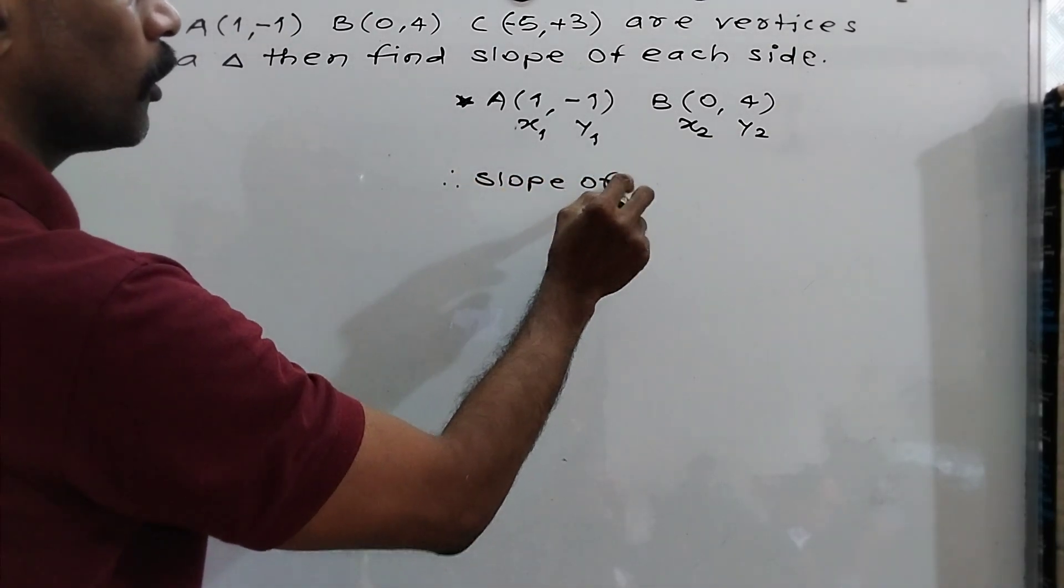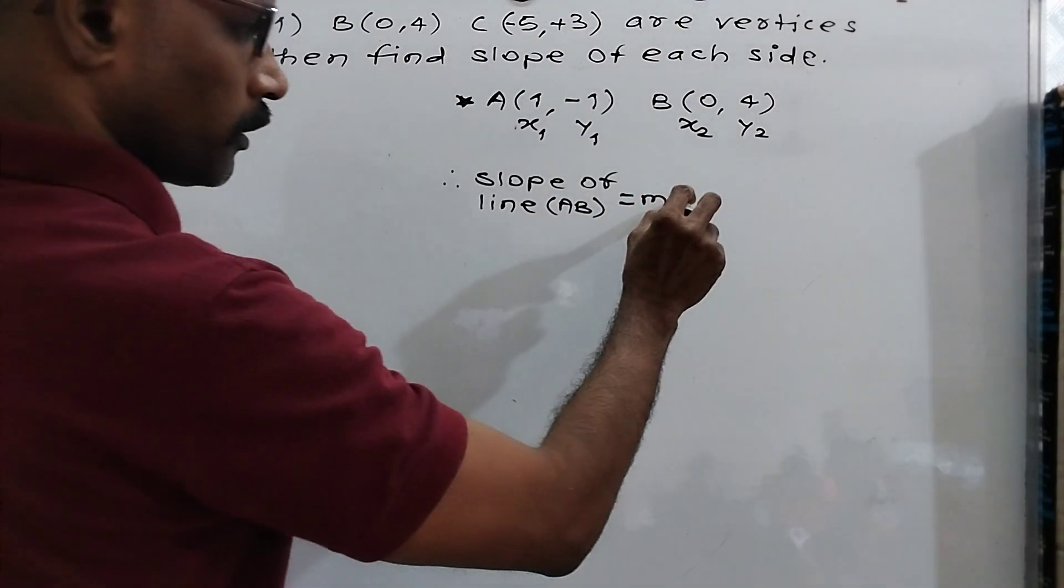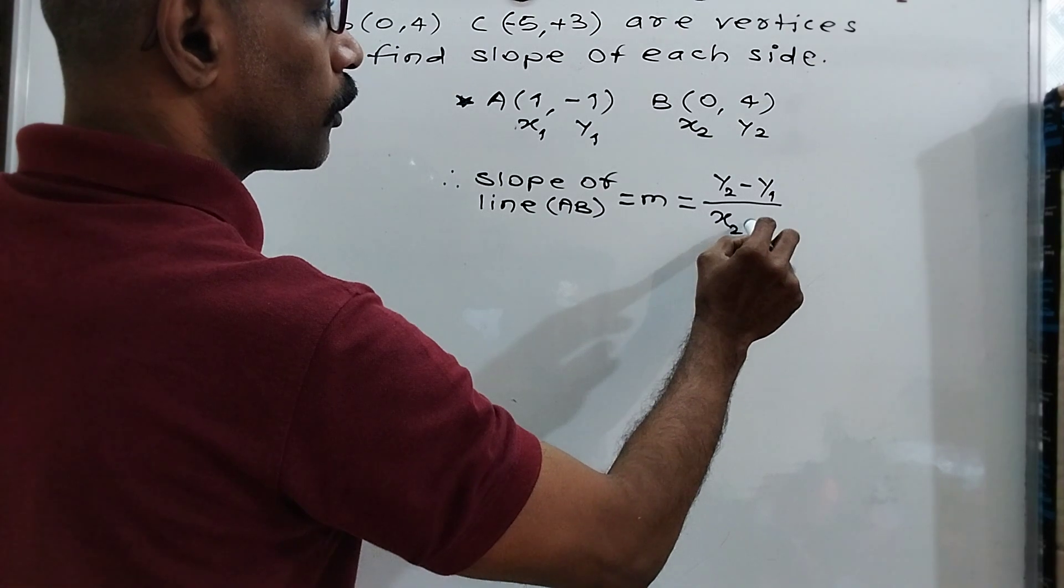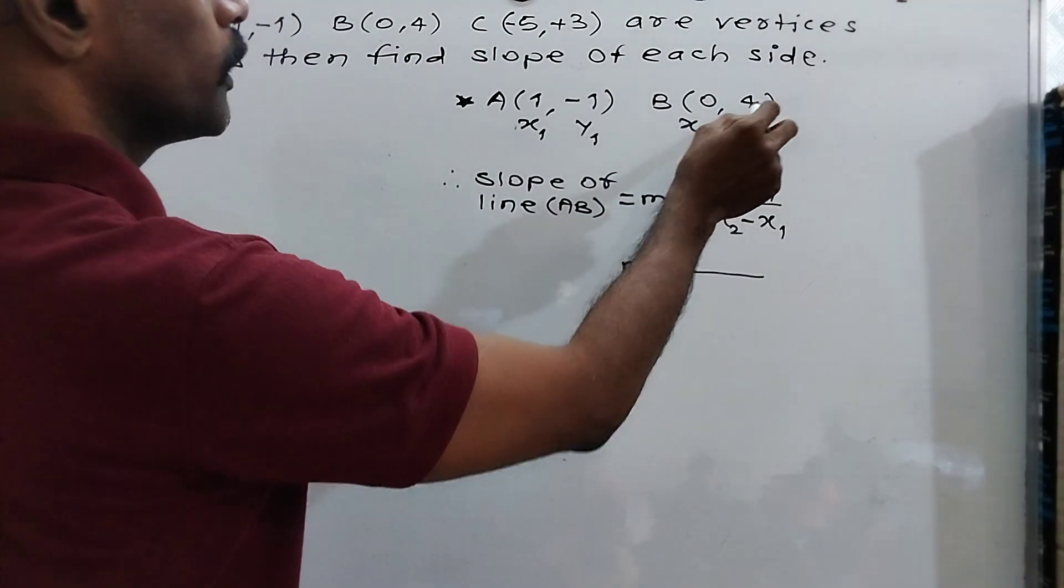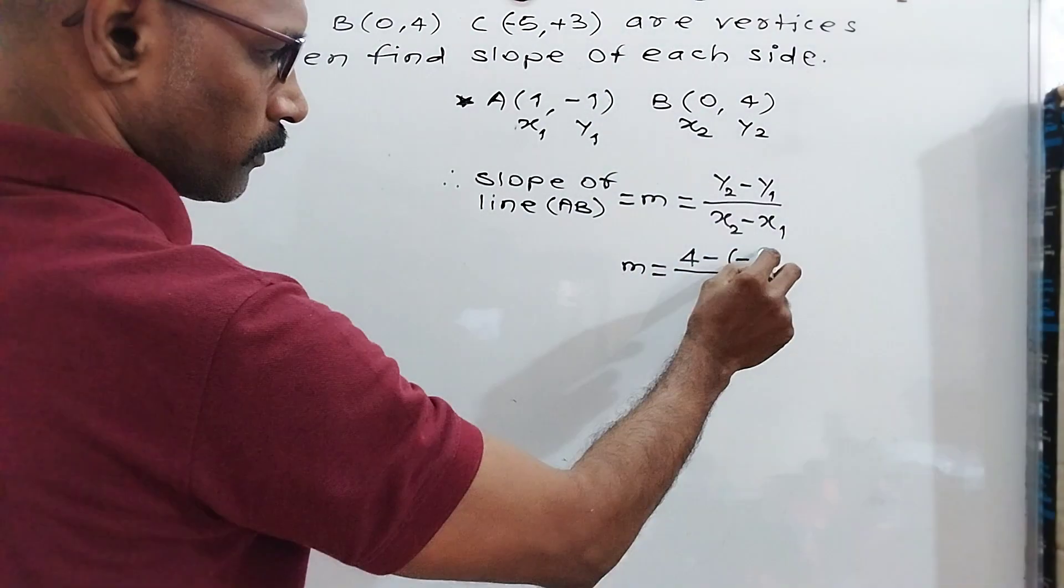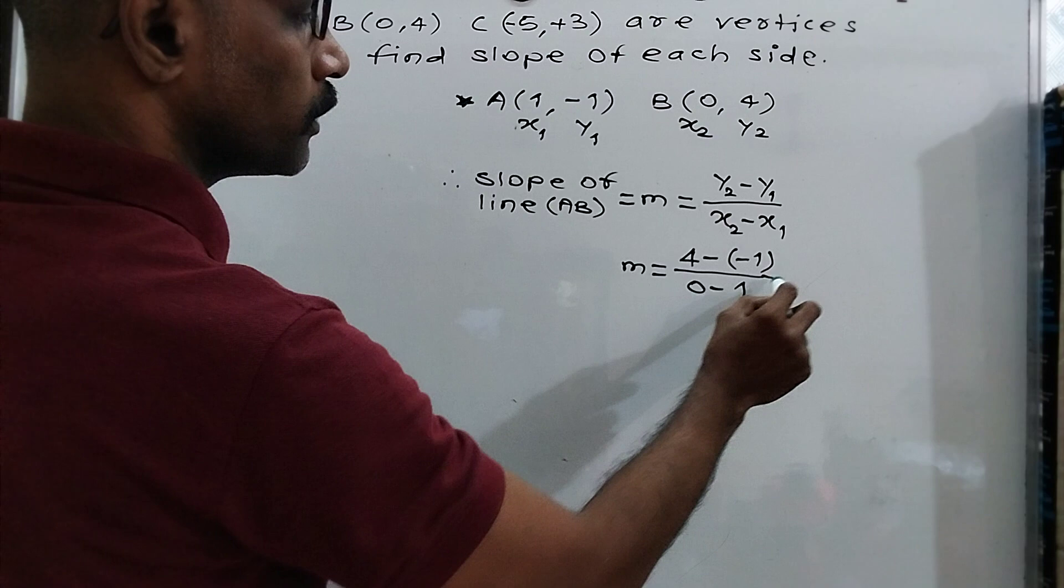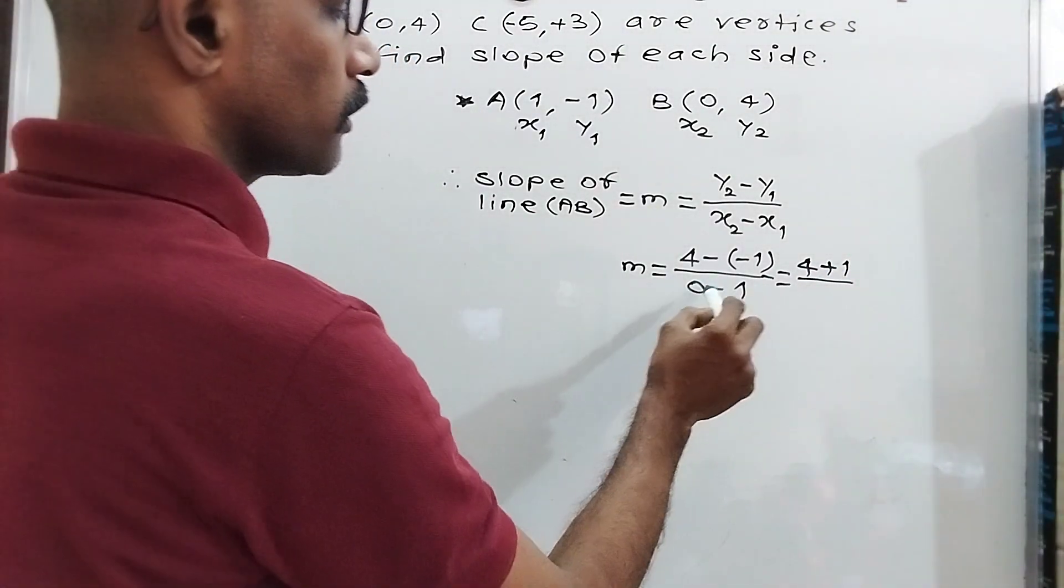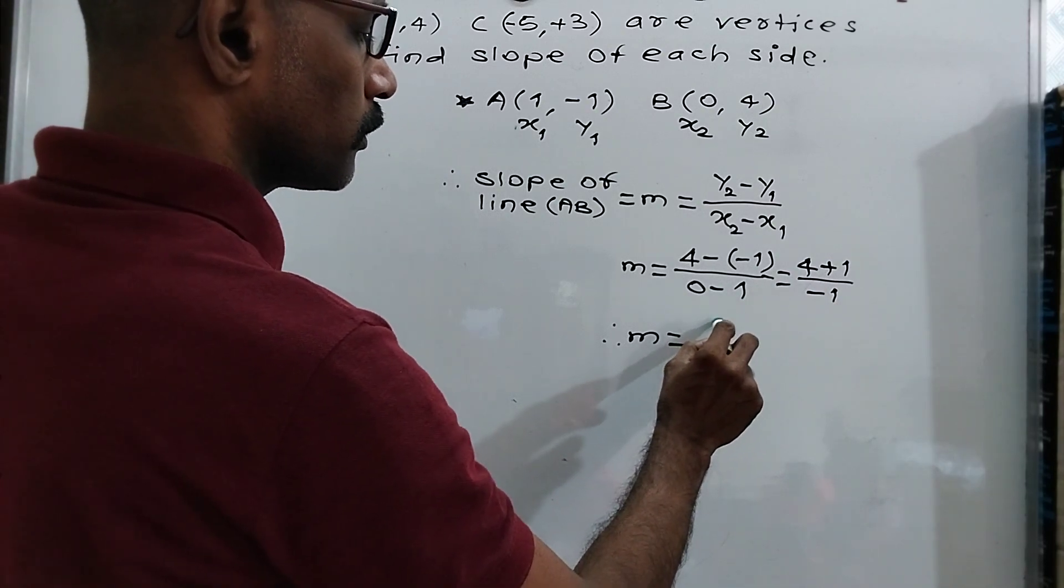Therefore, slope of line AB is equal to m, is equal to the formula y2 minus y1 upon x2 minus x1. Then we put value m is equal to y2 which is 4, minus y1 which is minus 1, upon x2 which is 0 minus x1 which is 1. Therefore 4 minus minus 1 is plus 1, upon 0 minus 1 means minus 1. Therefore m is equal to 5 upon minus 1 means minus 5.